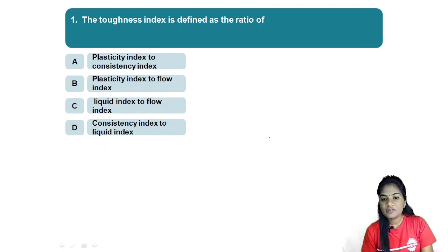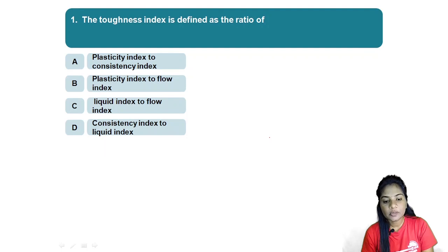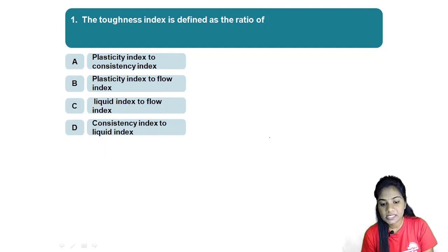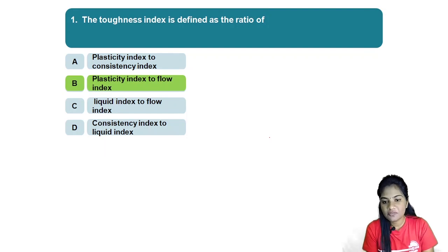First question: the toughness index is defined as the ratio of — A) plasticity index to consistency index, B) plasticity index to flow index, C) liquid index to flow index, D) consistency index to liquid index. The answer is B — plasticity index to flow index. Toughness index = IP / IF.